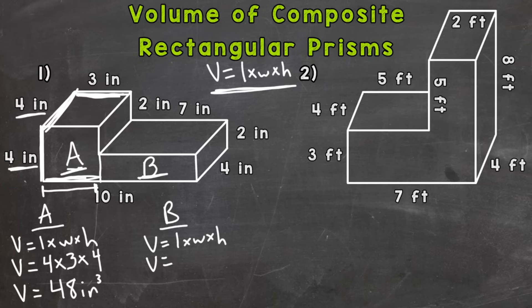So the length, how far back? Well, four inches. Times the width. Again, don't use that ten. That ten goes all the way across. That includes A and B. We just want the width here, which is going to be seven inches.